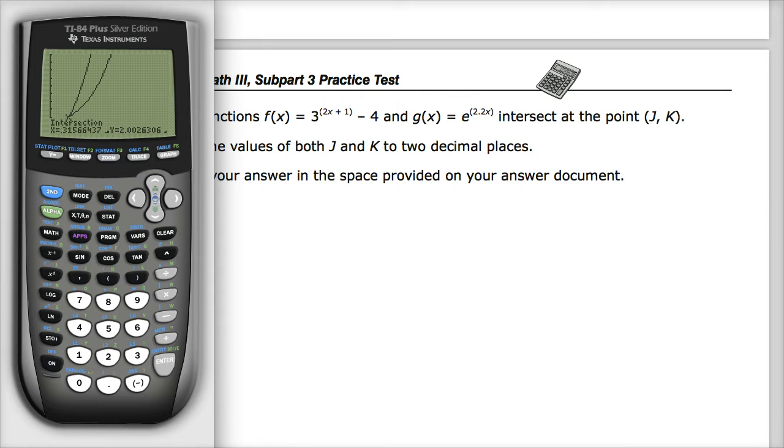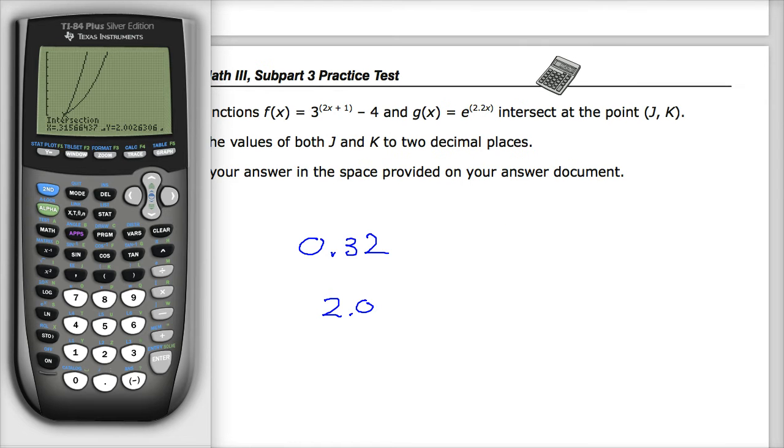So I get my final answer. And they want my x and y to two decimal points for whatever reason. So, 0.32 and 2.00. And you could probably just leave it as 2 and they'd be okay with it. So that's it.